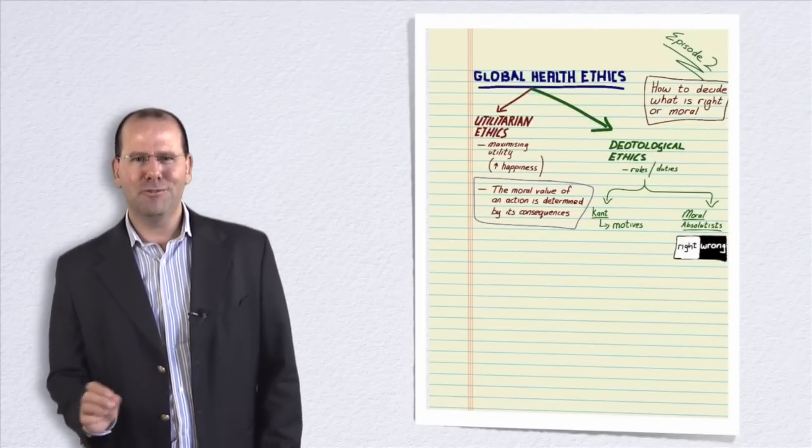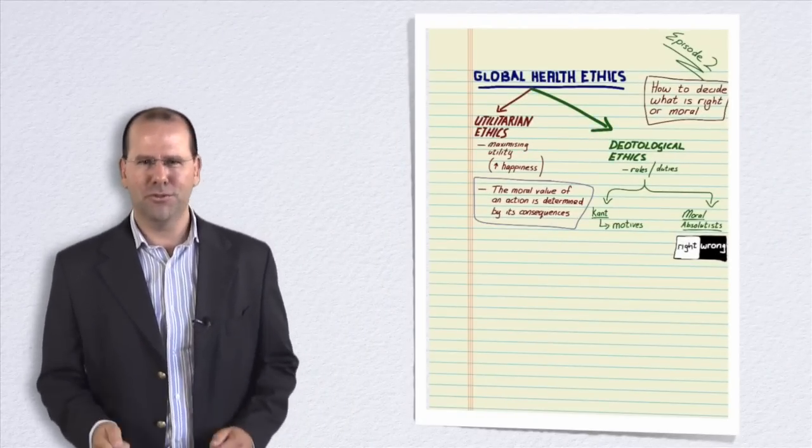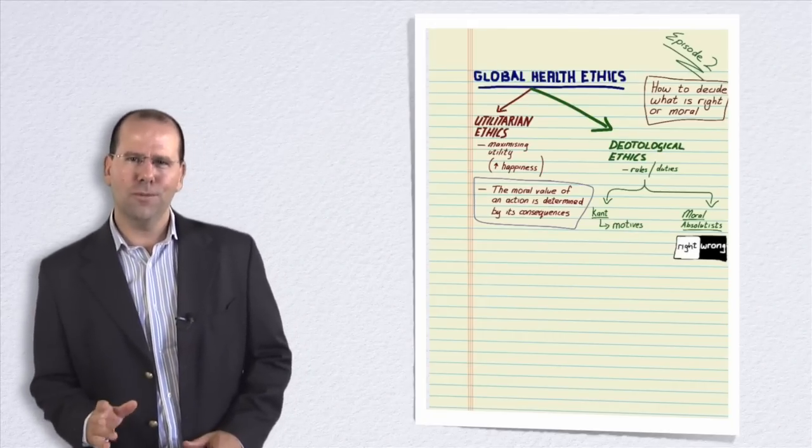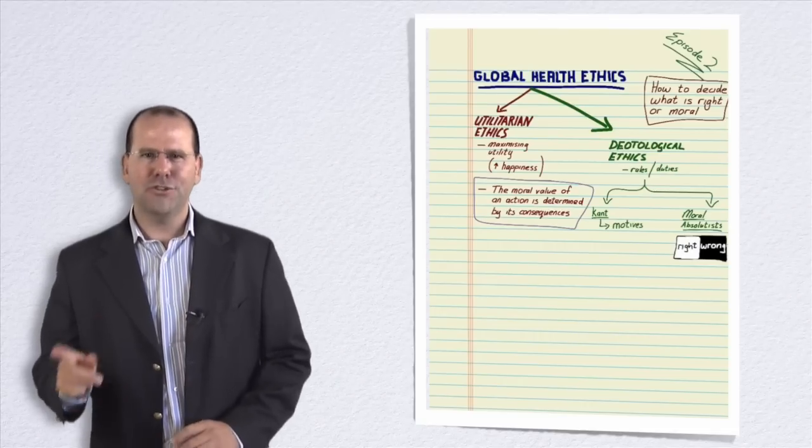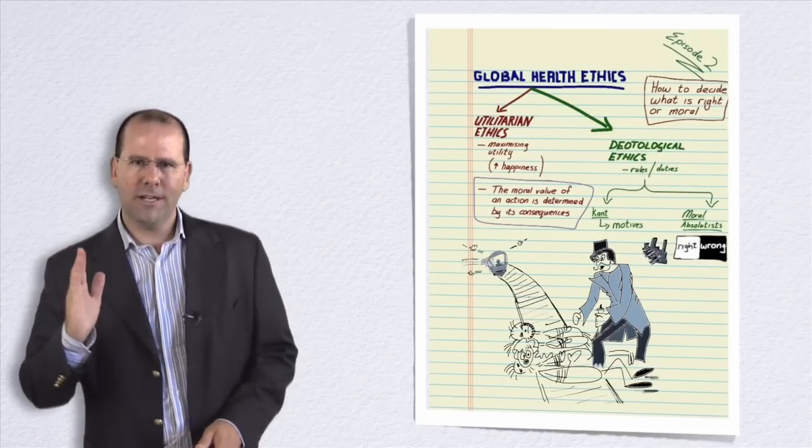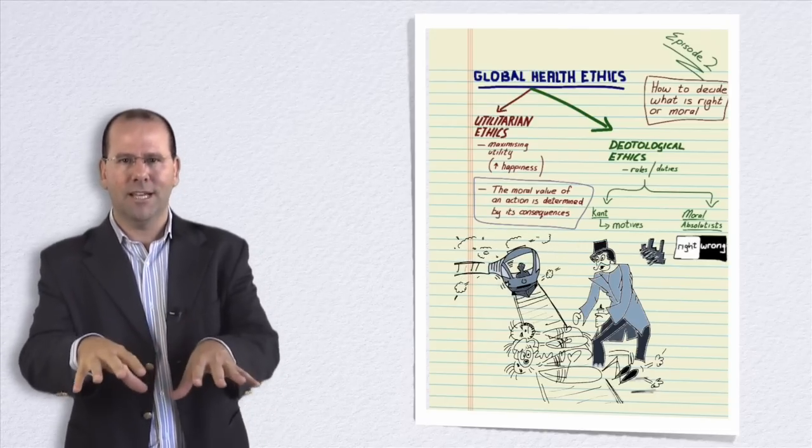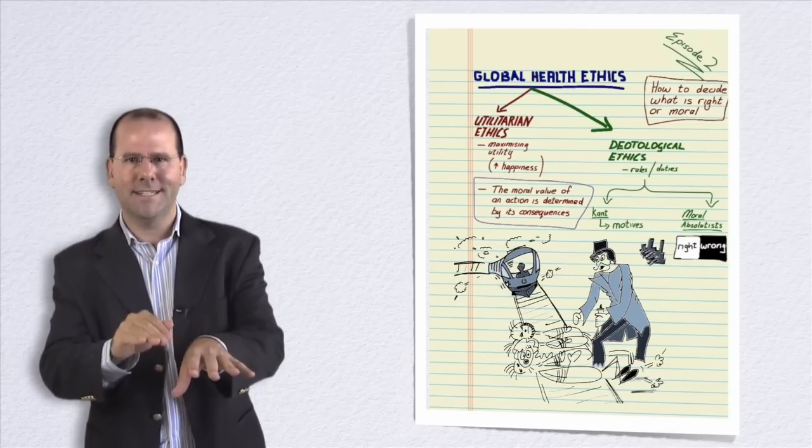I'd like to introduce you to an interesting thought experiment. This was introduced by a lady by the name of Philippa Foot in 1967 and it's called the trolley problem. Now imagine a trolley or a tram hurtling down a track and imagine that down the line an evil villain has tied five people to the track and they're all going to get killed when the trolley hits them.